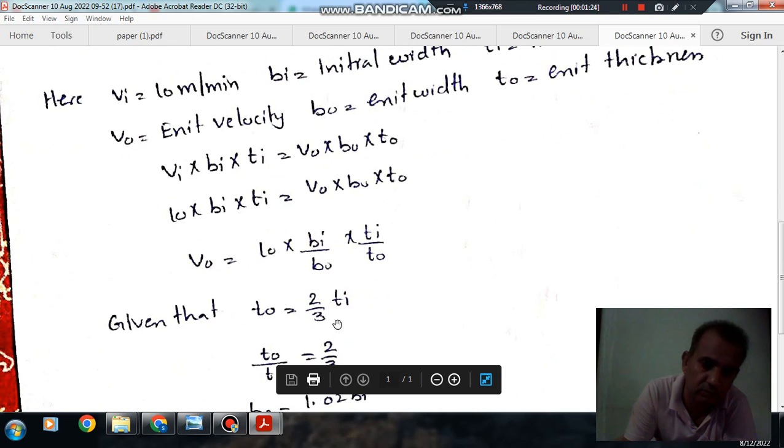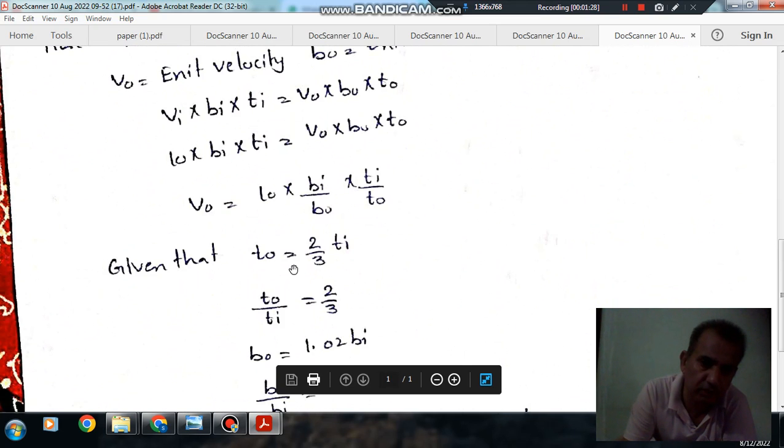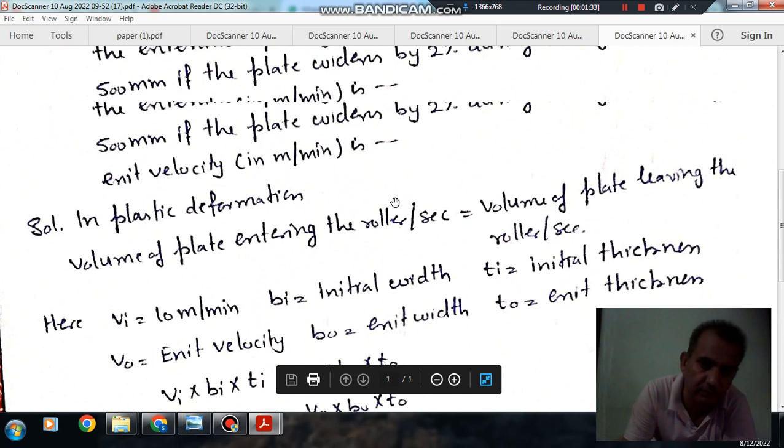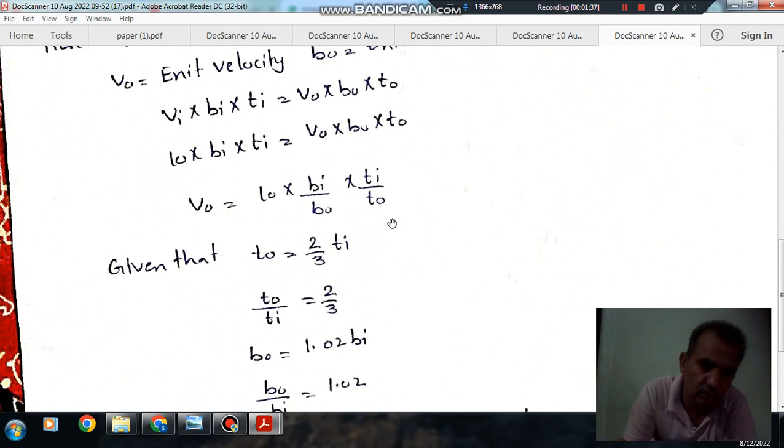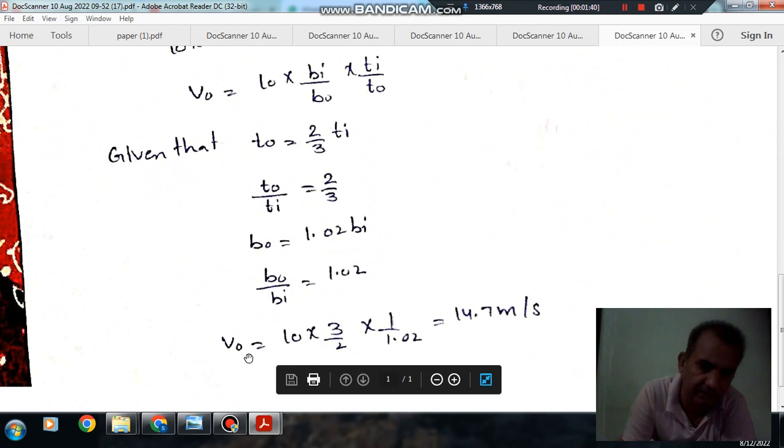t0 is 2/3 of ti, so t0/ti is 2/3. And b0 is 2% more than bi, so b0/bi is 1.02. Substituting these values, we get v0 = 10 × (3/2) × (1/1.02) = 14.7 meter per second.